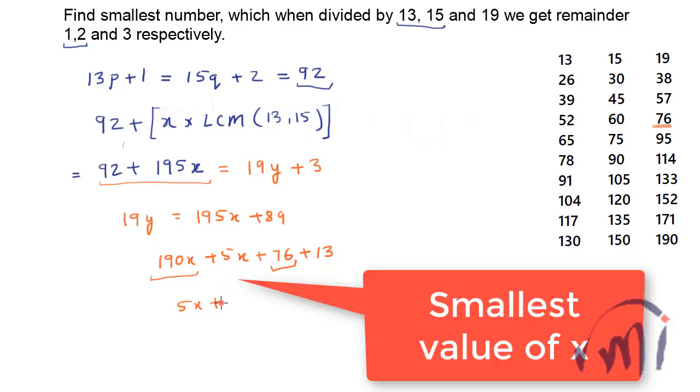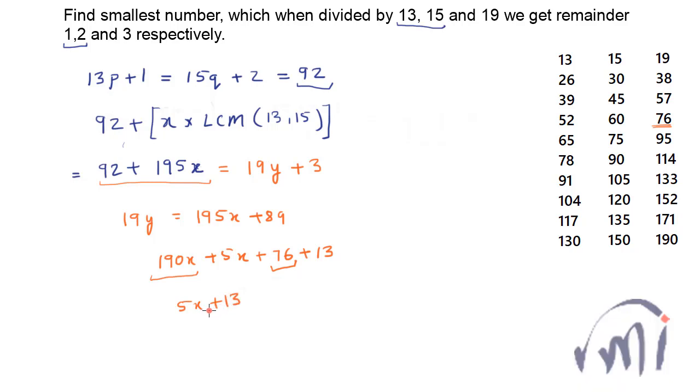So 19 times 2 is 38. That means if I substitute the value of x over here as 5 then this will be 25 plus 13 which is equal to 38 will be completely divisible by 19.